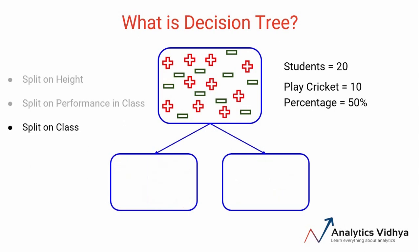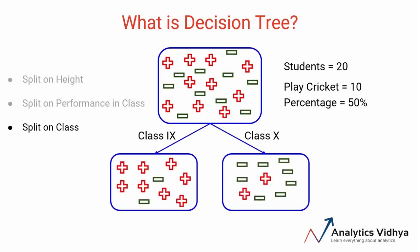Finally we have one more variable, class, and hence we can split the entire data on class as well. Let's say the students in this data are either from class 9 or class 10 and hence we can use them as categories to split the data. After the split we get this distribution.